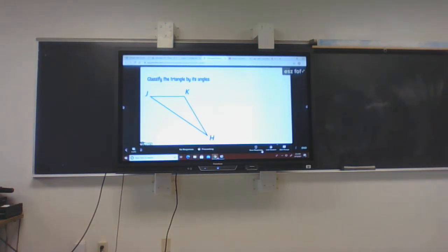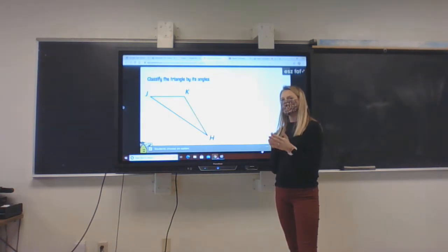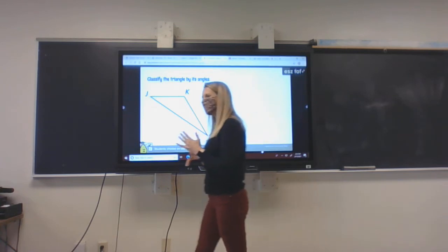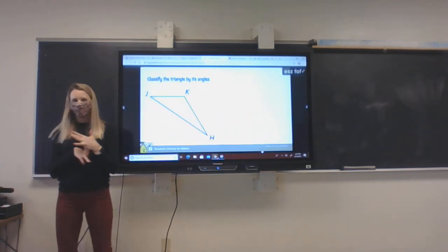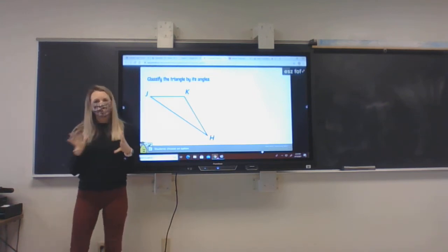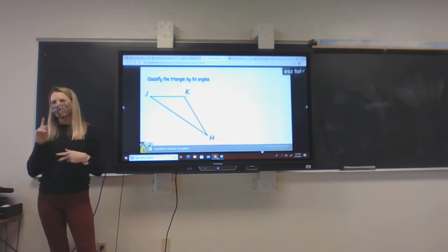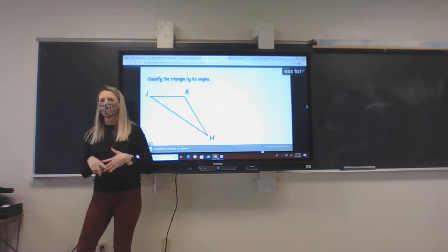Classify the triangle now by its angles. So we're going to have acute, right, obtuse, equiangular. Remember, you have some choices on your Pear Deck. Look at the triangle. Remember if we have an acute triangle, all three angles have to be acute. When you get to the right triangle and the obtuse triangle, you're only looking at one of the angles. So look to see, do I have all acute angles? Do I have one right angle? Do I have one obtuse angle?